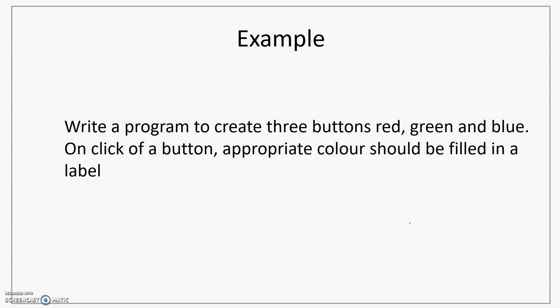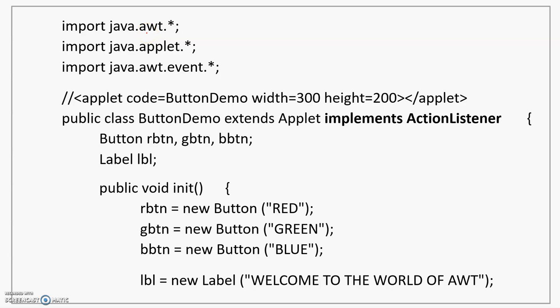To understand this better, let's look at a program where we create three buttons and one label. The buttons are associated with three colors — red, green, and blue — and clicking a button results in that color being filled in the label. We do imports at the top: java.awt for the applet container, and java.awt.event for all event handling related classes, listeners, and event classes. We create a class ButtonDemo that extends Applet and implements ActionListener, because we are interested in clicking or pressing of a button, which is noted by ActionListener.